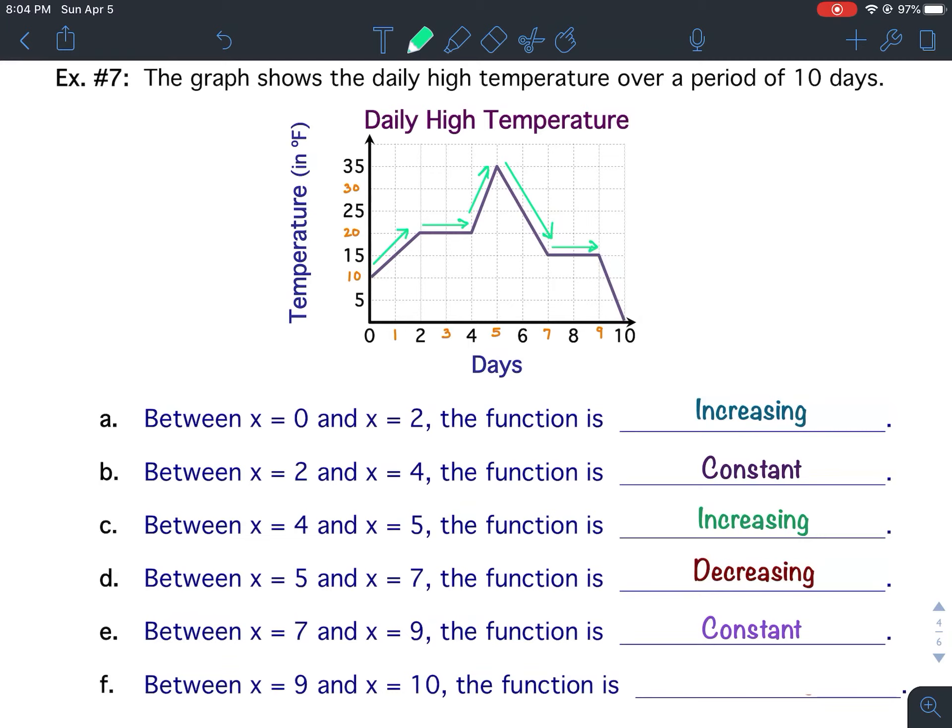And then last, from day 9 to day 10, it's going downward again. That means it is decreasing. Between x equals 9 and x equals 10, the function is decreasing.